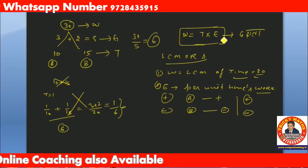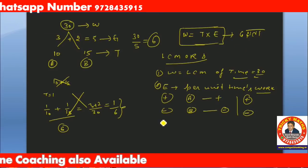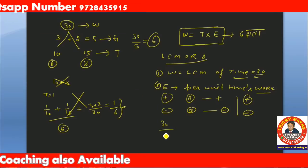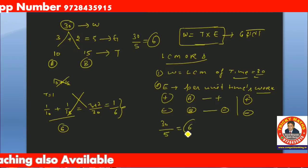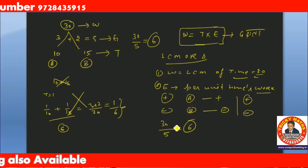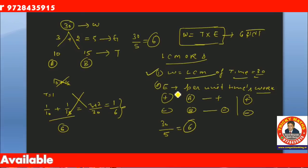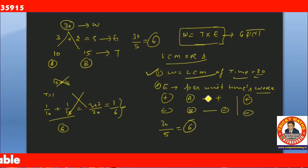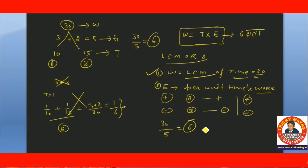Work is equal to time multiplied by efficiency. Now, if both together have efficiency 5, time = work divided by efficiency, the answer is directly 6. I again repeat the basic concept: first step - take work as the LCM of the time. Second step - find their individual efficiencies. Efficiency = work divided by time. More than 80 percent of questions depend only on this concept.